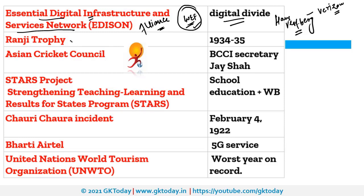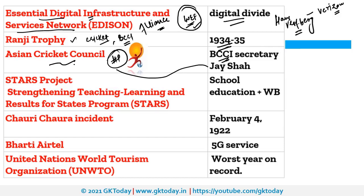The Ranji Trophy is a domestic cricket tournament organized by BCCI since 1934-35. For the first time in its history, this tournament will not be organized this year due to the coronavirus issue. BCCI Secretary Jay Shah has been elected as the new President of the Asian Cricket Council, which organizes the Asia Cup tournaments.